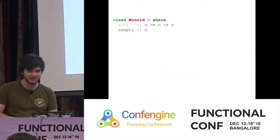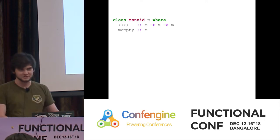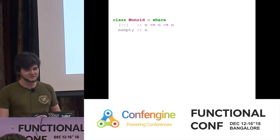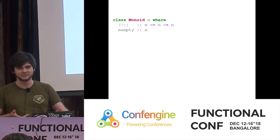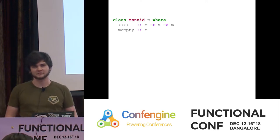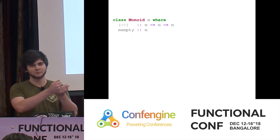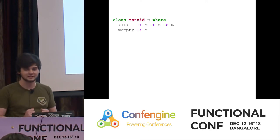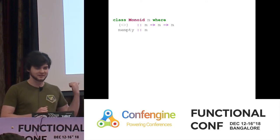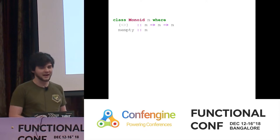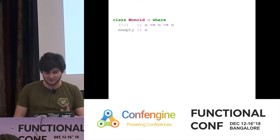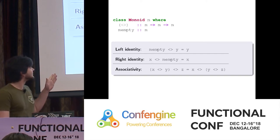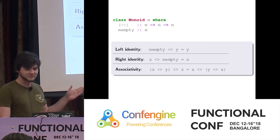This is Monoid. It's a type class quite prevalent in Haskell, in the base library. Monoid has two members. One is called '<>', which I'll pronounce Append — it takes two things of type M and combines them to produce a third. The other is mempty (empty for short), the identity element. To be a Monoid you must also obey three laws: the Left Identity Law, the Right Identity Law, and Associativity.